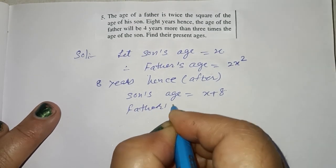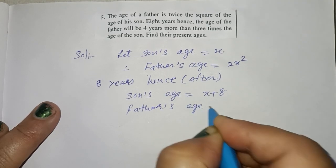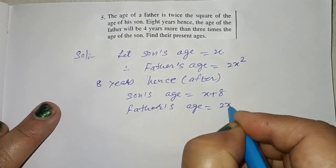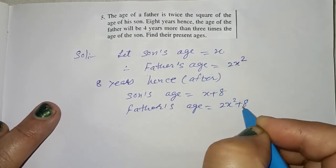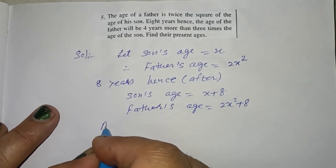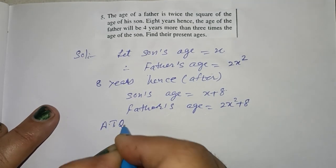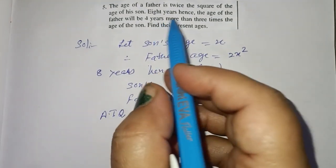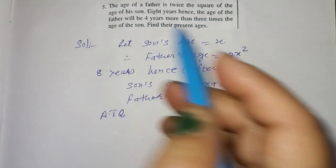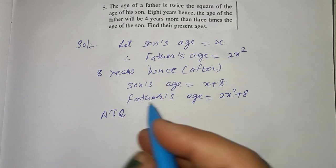Father's age is equal to 2x square plus 8. According to question, age of father is equal to 2x square plus 8.